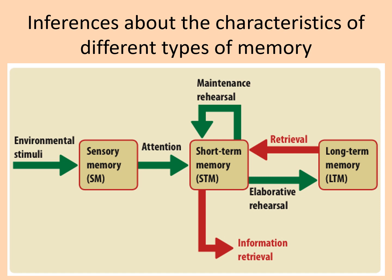If you've done the memory unit, you'll know the multi-store model of memory, which is a linear model starting on the left with environmental stimuli. It shows how information flows through the cognitive system — your brain — to be transferred into different types of memory and eventually into long-term memory. Each of the stores, the boxes you can see, are different types of memory, and cognitive psychologists did experimentation to understand the characteristics of those different stores.